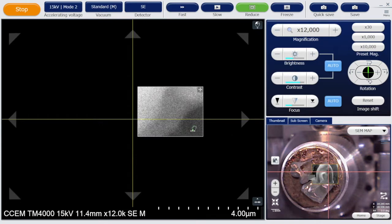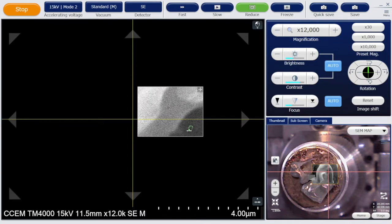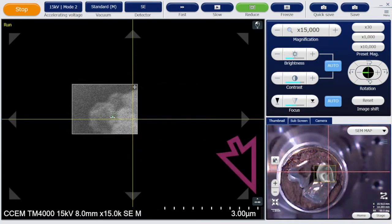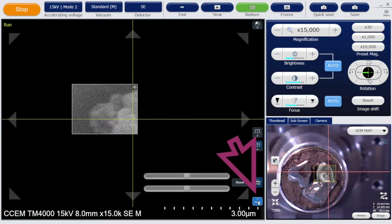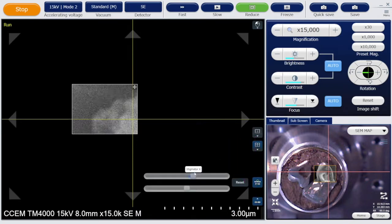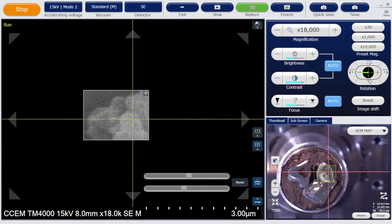The astigmatism can be corrected with stigmators. Click the stig, which is the little pop-up on the bottom right, and play around with both directions x and y until you get the best quality image and try fixing the focus again.